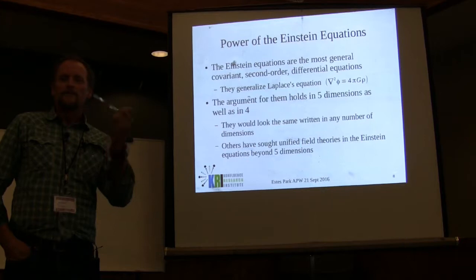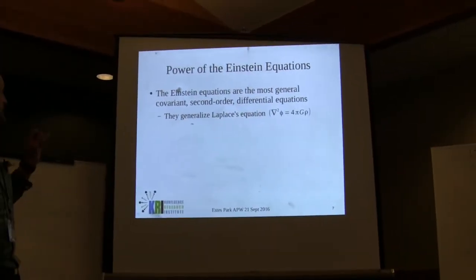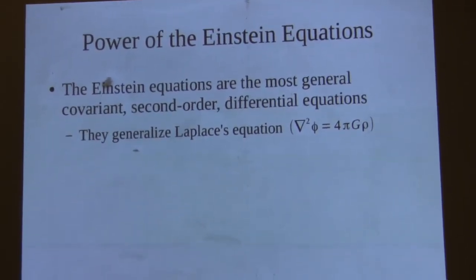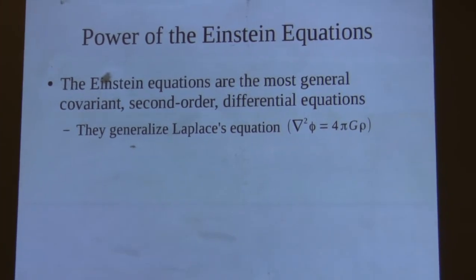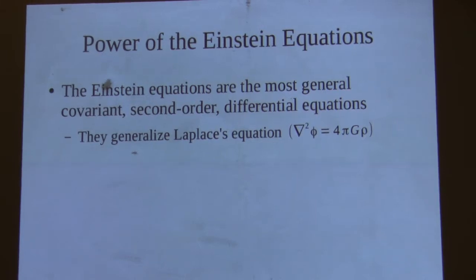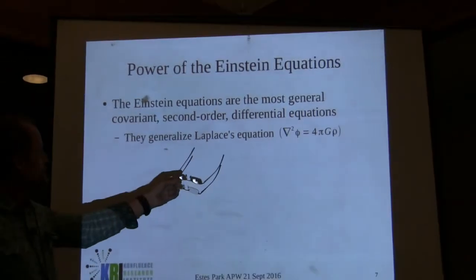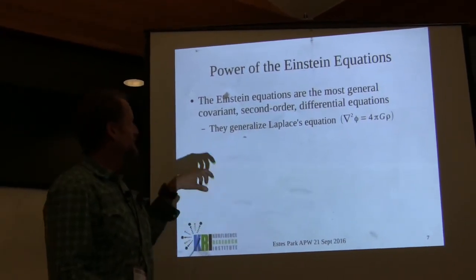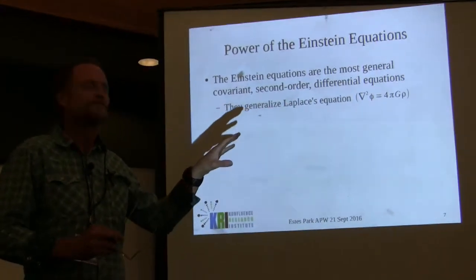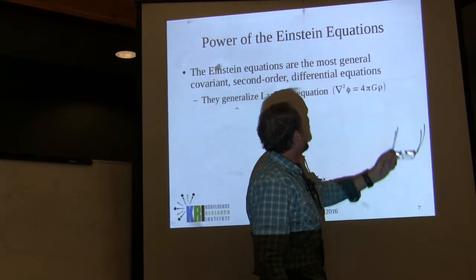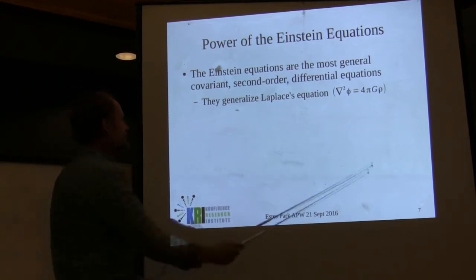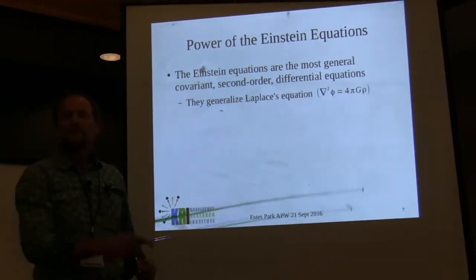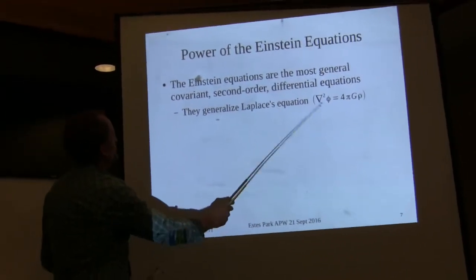It's based on the power of the Einstein equations, published in 1915. They turn out to be the most general, covariant, second-order differential equations - they generalize Laplace's equation, which is also Newton's law of gravity. Written where the gravitational force is the gradient of a scalar, you can see the gravitational constant and the mass density of a source. Integrating gives the standard form where the gravitational force is GMm over r squared.